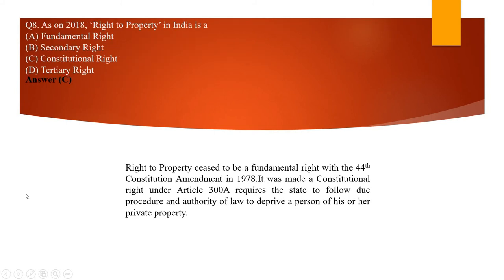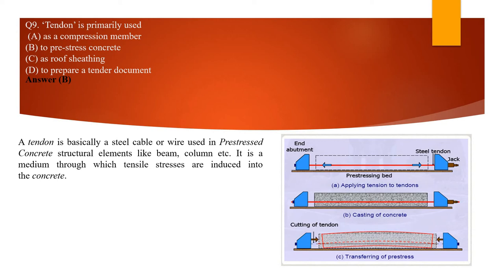The next question: as of 2018, the right to property in India is what? It cannot be a fundamental right — we know there are only six fundamental rights. There is nothing known as a secondary or tertiary right, so it must be a constitutional right. The right to property ceased to be a fundamental right with the 44th Constitutional Amendment in 1978. Under Article 300A, it requires the state to follow due procedure and authority of law to deprive a person of private property. After 1978, it is no longer a fundamental right.